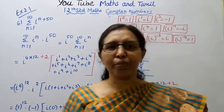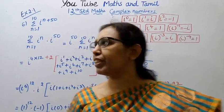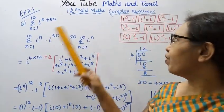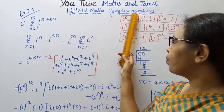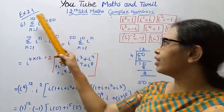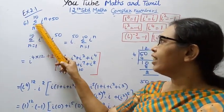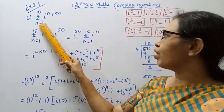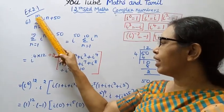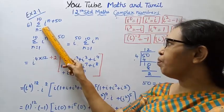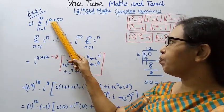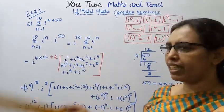Hello students, welcome to Max and Tamil channel. 12th standard maths, complex numbers, exercise 2.1: sigma n equal to 1 to 10, i power n plus 50.